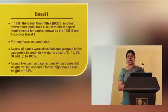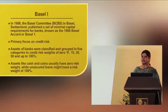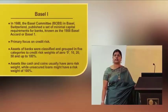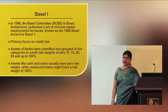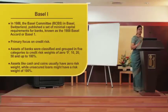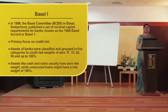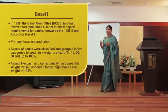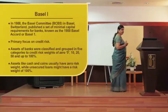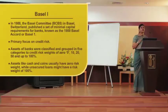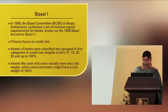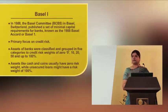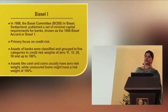In this Basel Accord, the assets of the banks were classified. The assets of the banks are loans and advances — whether fund-based or non-fund-based. These assets were classified and grouped into five categories depending on the credit risk weight and the collateral or primary security taken for the lending purpose. On that basis, credit risk weights were allocated to all these assets of the banks, ranging from 0, 10, 20, 50 up to 100%.